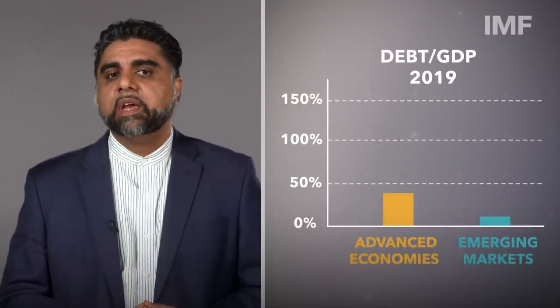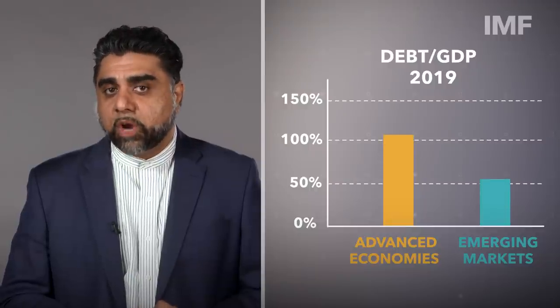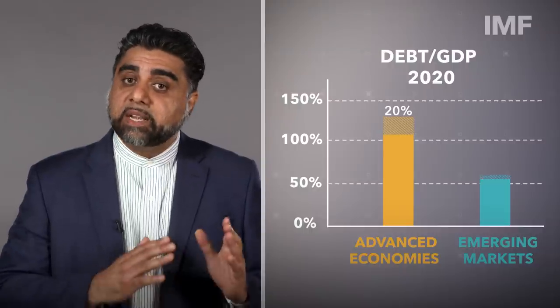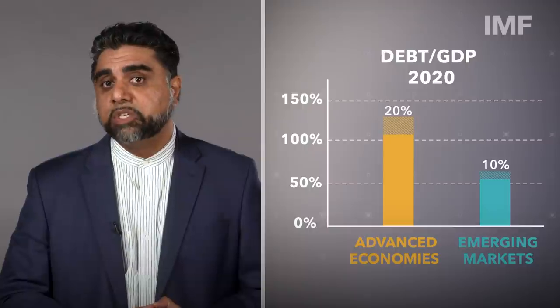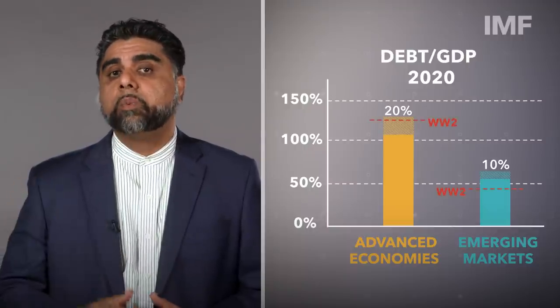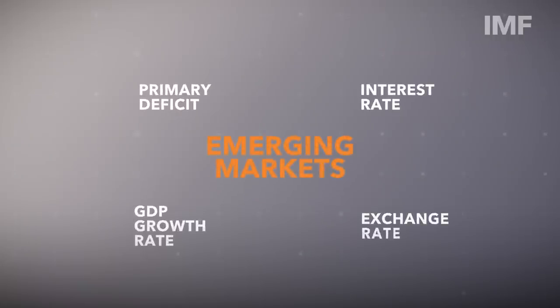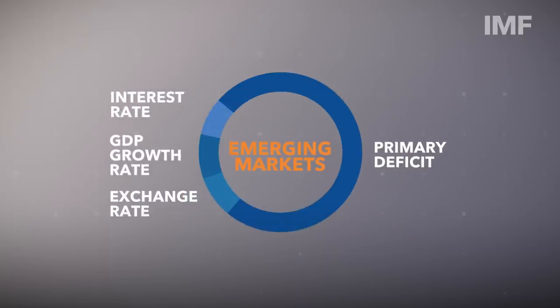We can use this framework to forecast debt ratios in the aftermath of the COVID-19 pandemic and the accompanying lockdowns. As you can see, debt-to-GDP ratios are expected to rise by 20 percentage points in advanced economies and 10 percentage points in emerging markets in 2020, taking them above World War II levels. If we look at emerging markets, all four of our drivers are contributing to this increase. The primary deficit is the biggest contributor, accounting for three-fourths of the debt increase.